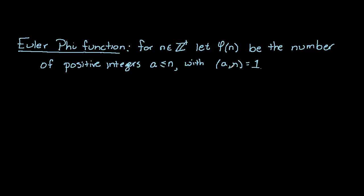This last bit is another way of saying that a and n are relatively prime. So let's write that down: a and n are relatively prime.